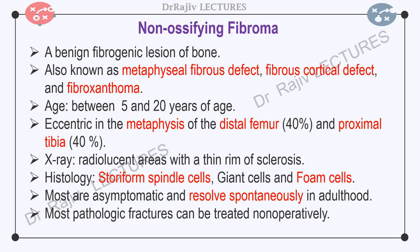Non-ossifying fibroma is a benign fibrogenic lesion of bone. It is also known by various names like metaphyseal fibrous defect, fibrous cortical defect, and fibroxanthoma. Patients typically present between 5 and 20 years of age. Lesions are discovered incidentally on radiographs. The vast majority arise eccentrically in the metaphysis of the distal femur and proximal tibia. On radiographs, these are small, sharply demarcated radiolucent areas surrounded by a thin rim of sclerosis.